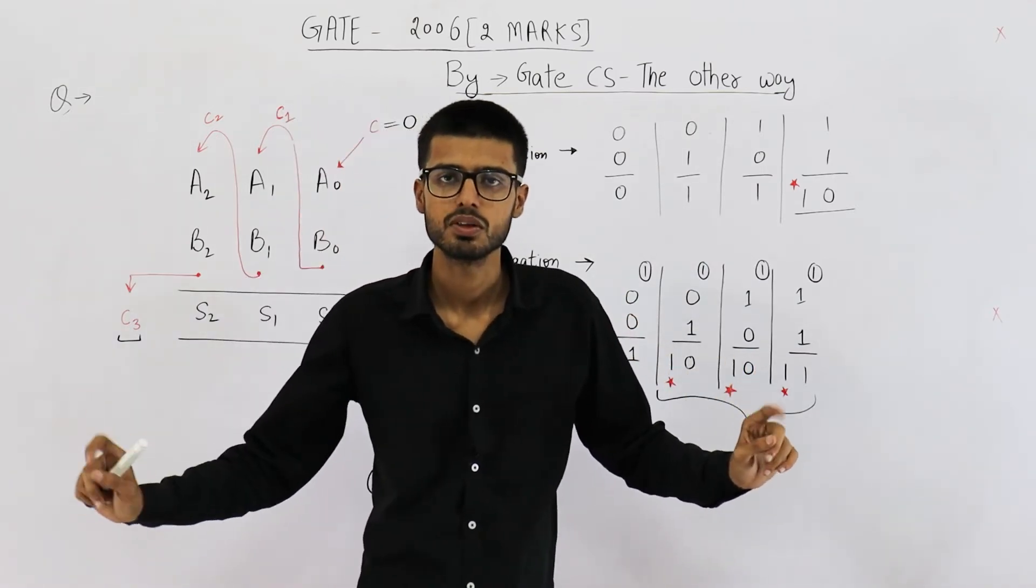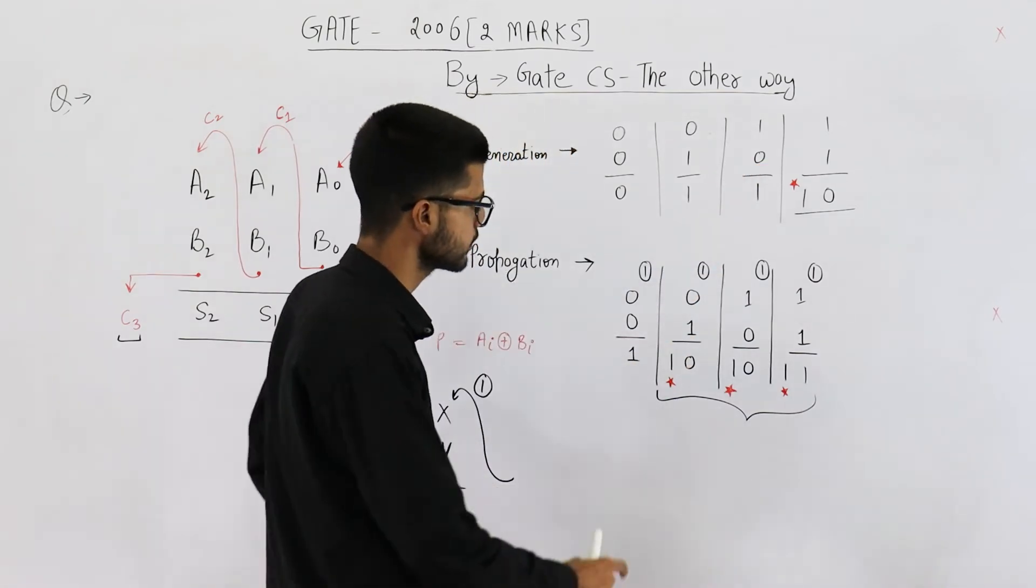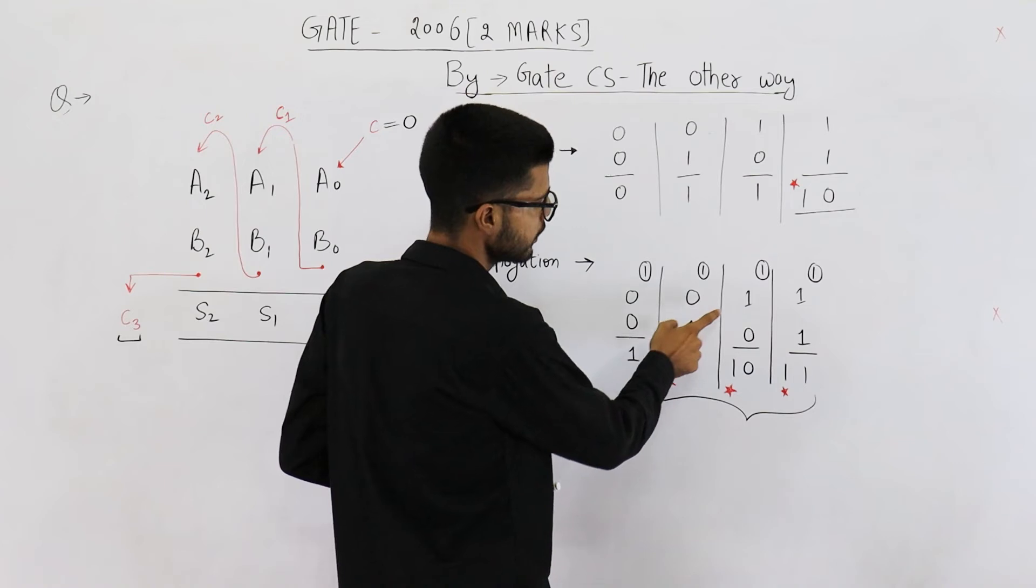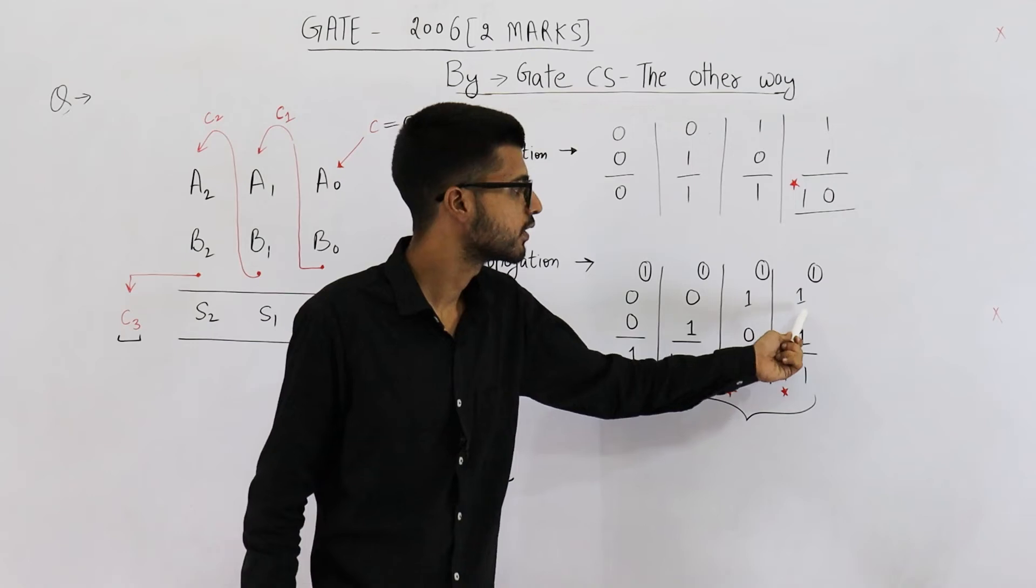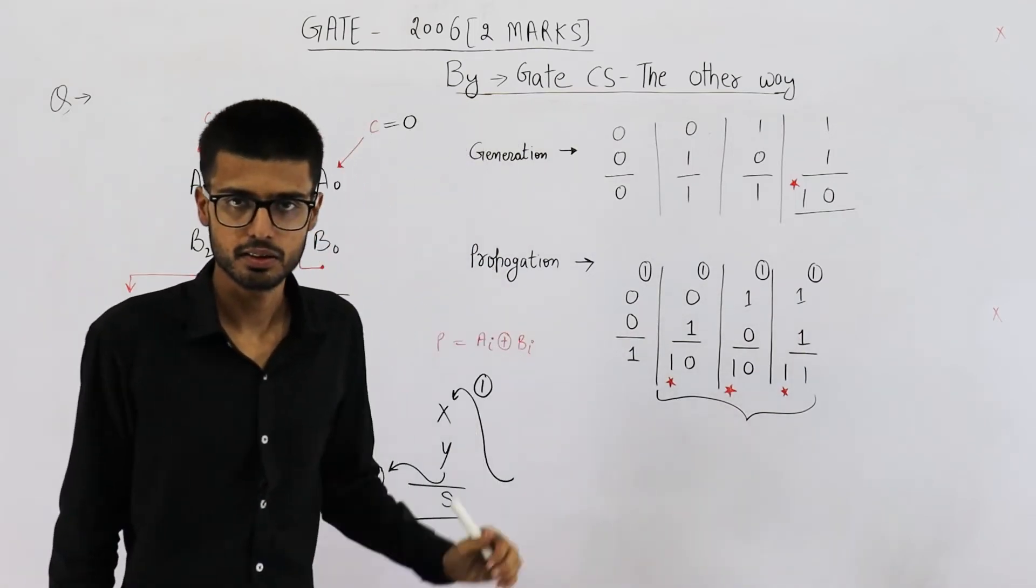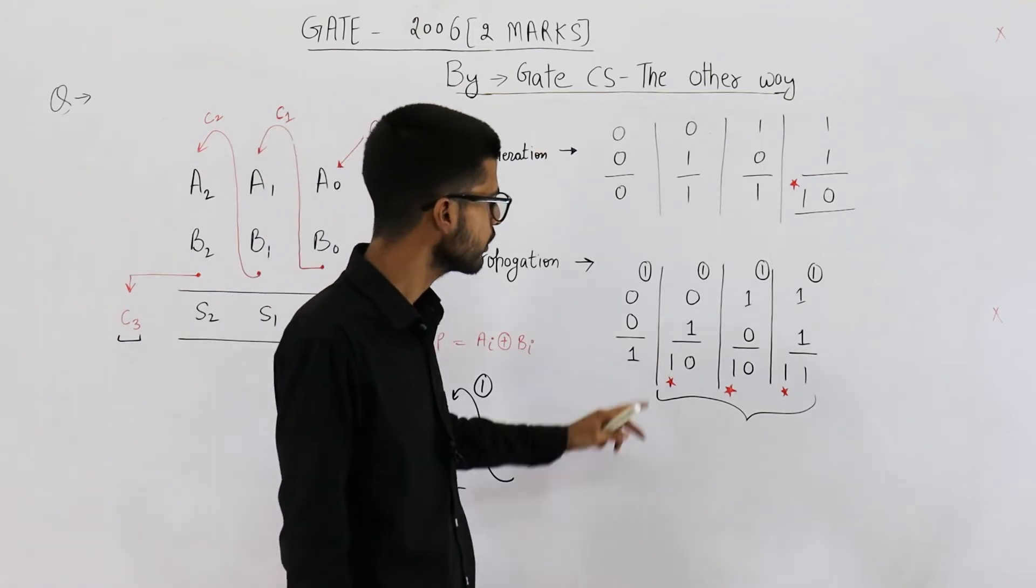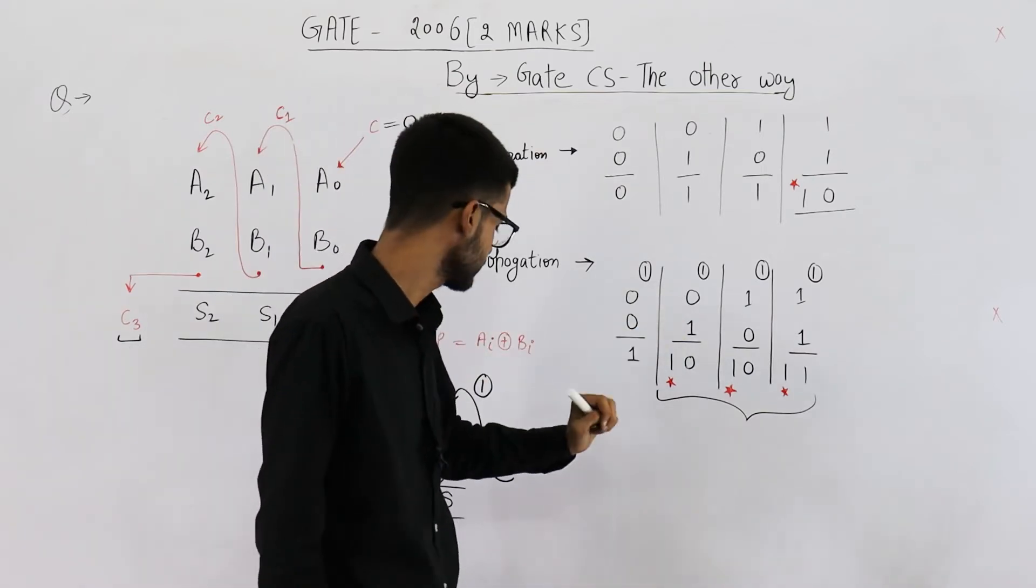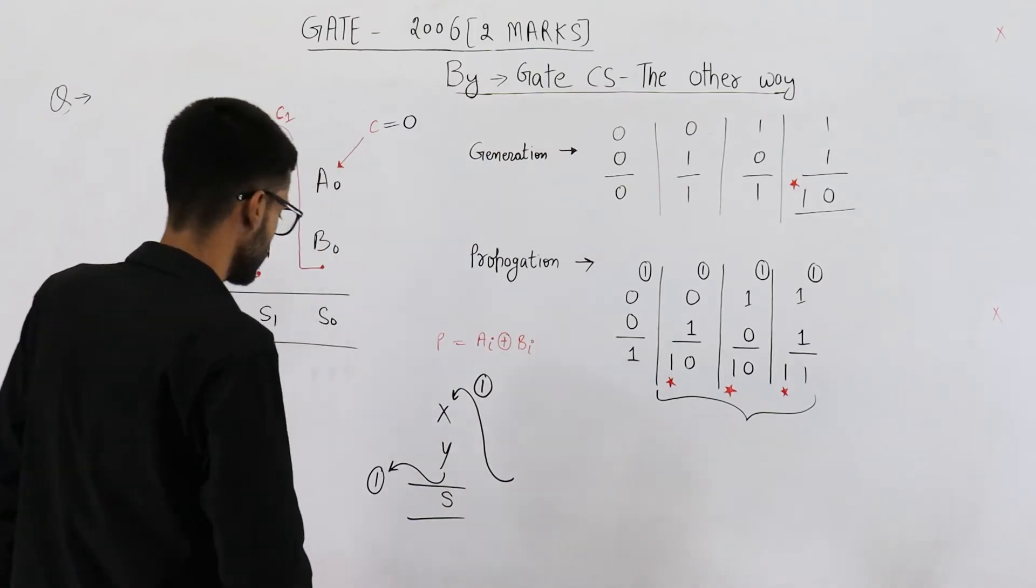So carry in got propagated as it is. Carry in is also 1, carry out is also 1. So this is AND and this is OR. See 0, 1, 1, 0, 1, 1, 1. They are the conditions for OR. If any one of the bits is high, that is the condition for OR. So x OR y is the condition for carry being propagated. Now let us try to write the equations.